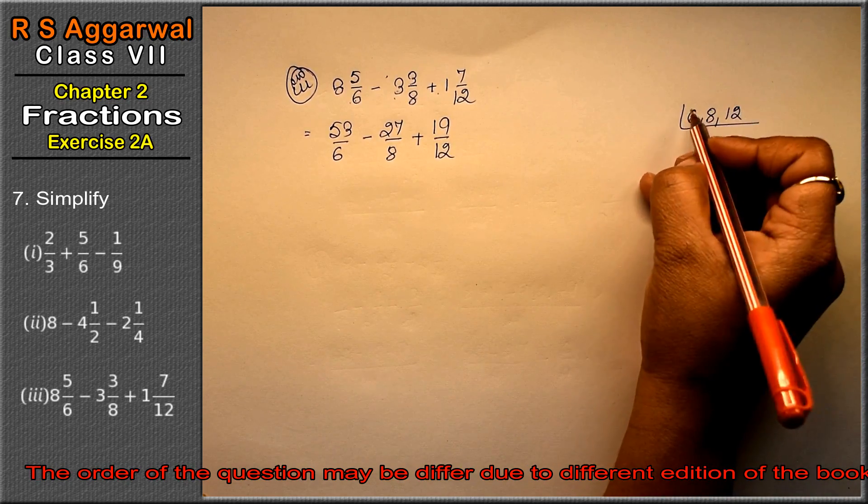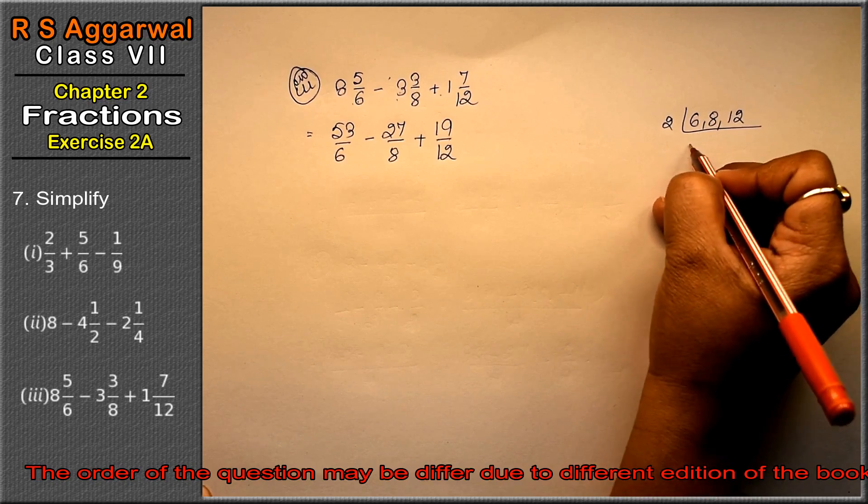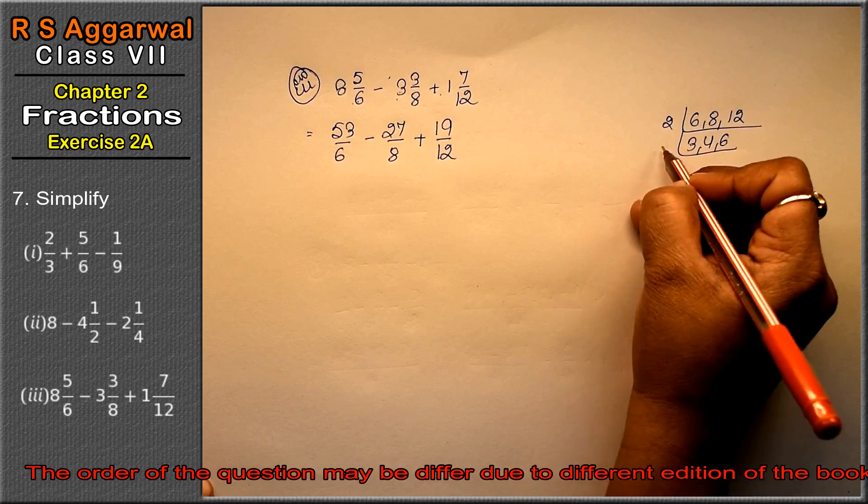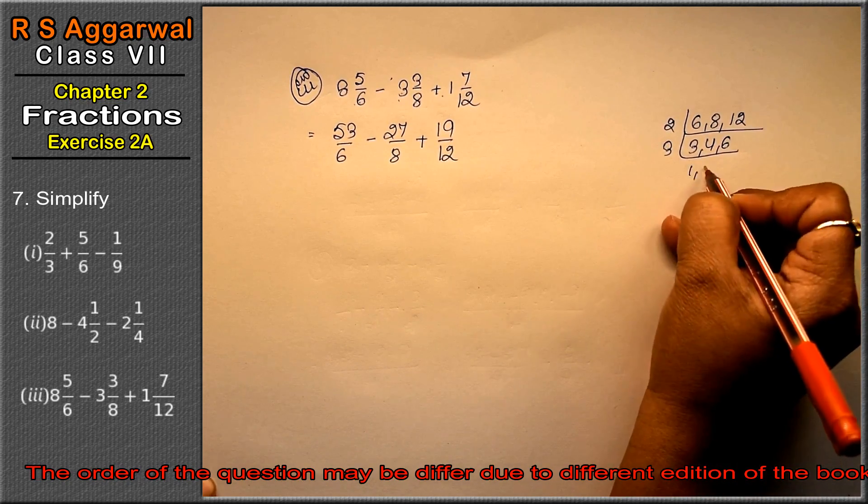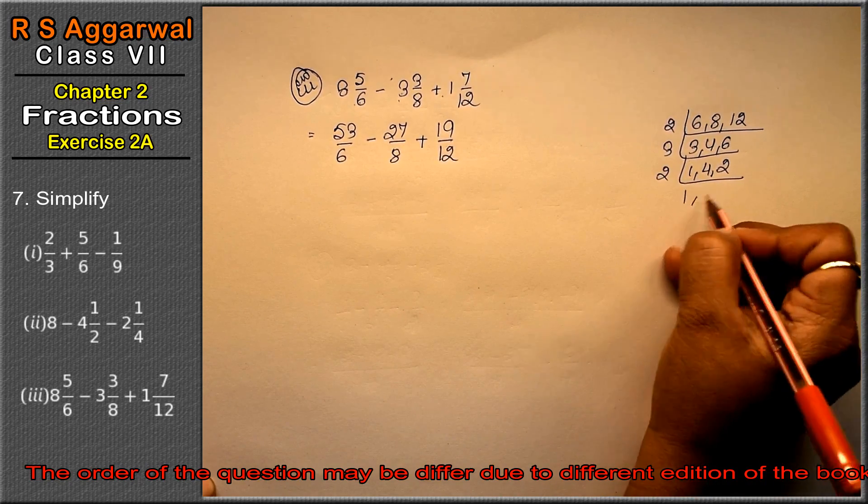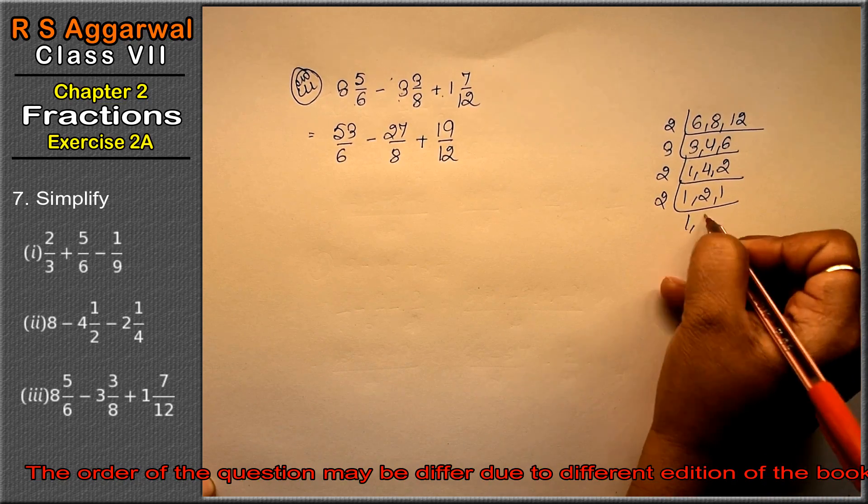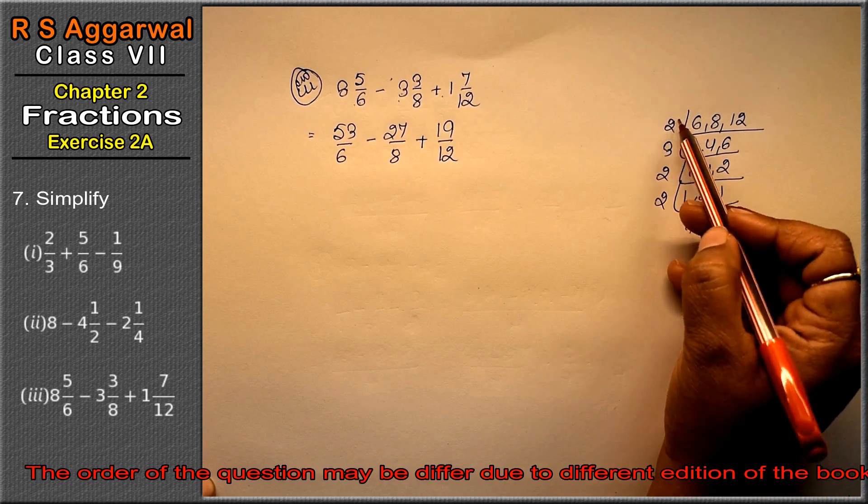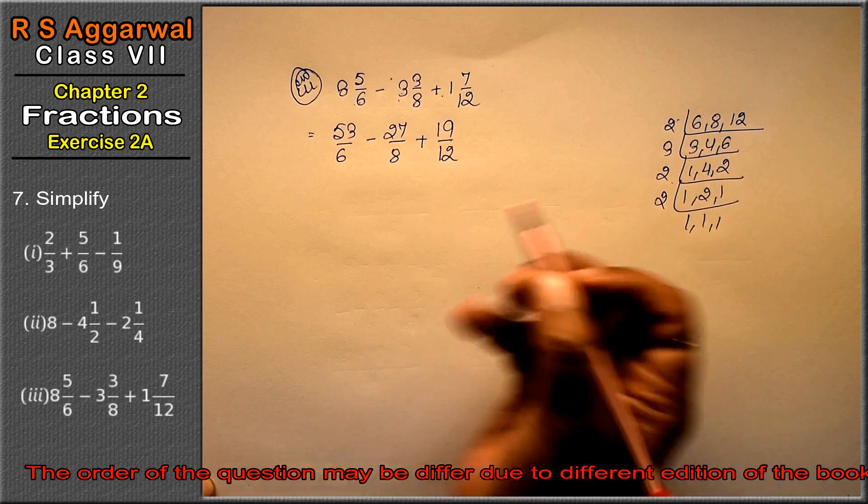Now LCM lehengi 6 ka, 8 ka, and 12 ka. Now 2, 3 is 6. 2, 4 is 8. 2, 6 is 12. 3, 1 is 3, 4 as it is, 3, 2 is 6. 2, 1, 2 and 1. Again 2, 1, 1 and 1. So 2, 3 is 6, 6, 4 is 24.